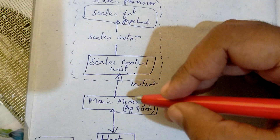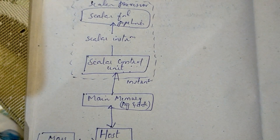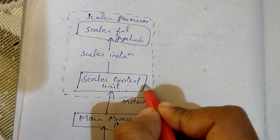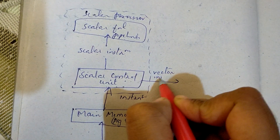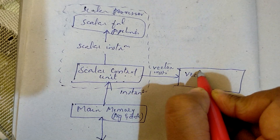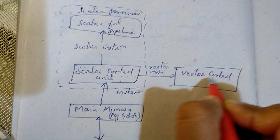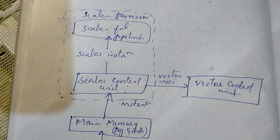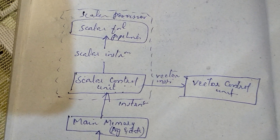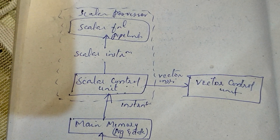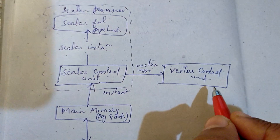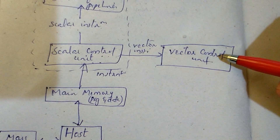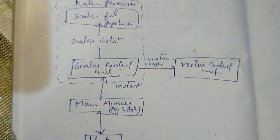Suppose the decoded instructions are vector instructions — how to control vector operations. In this case, we are going to use the Vector Instructions, which go to the Vector Control Unit. So, the Vector Instructions are handled by the Vector Control Unit.